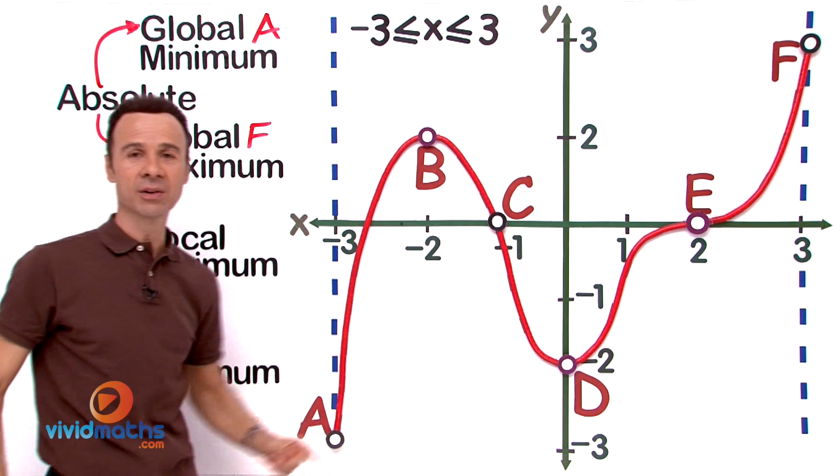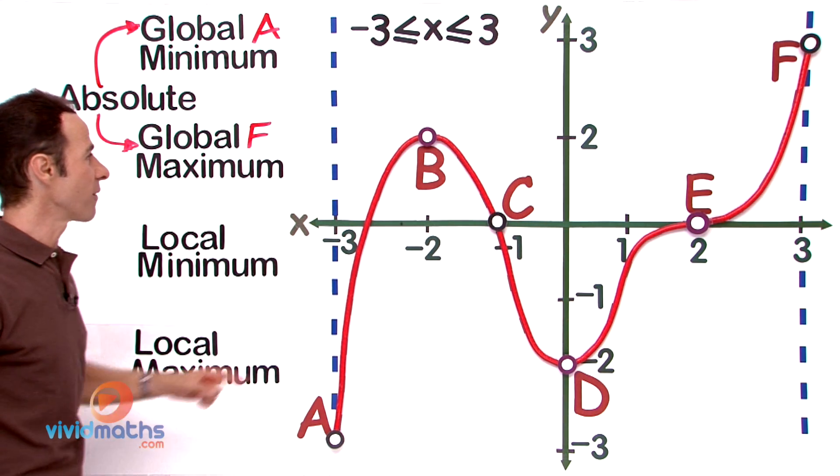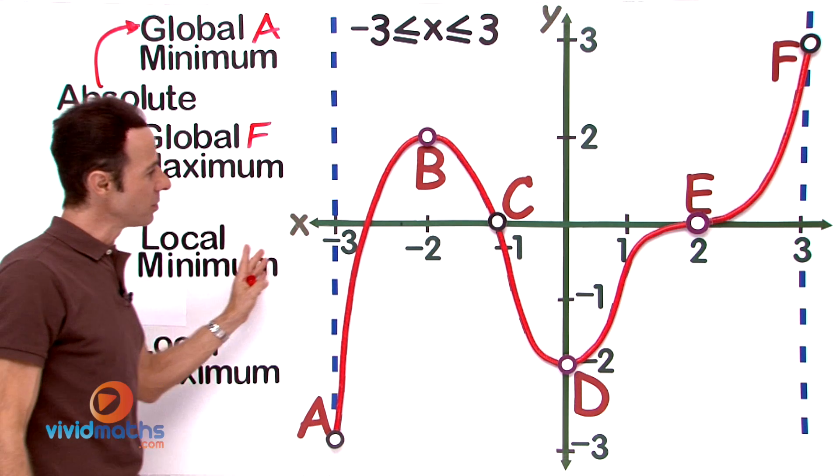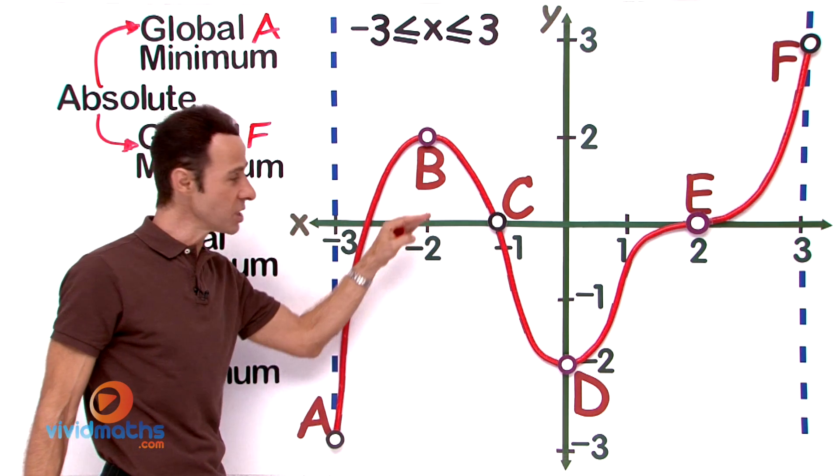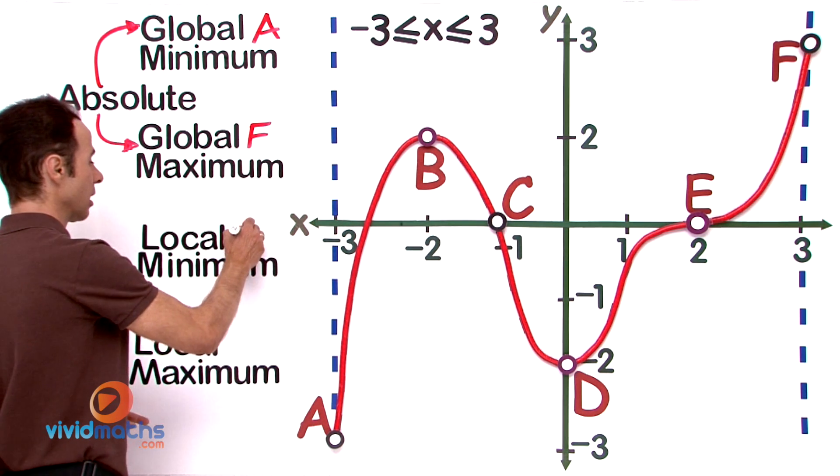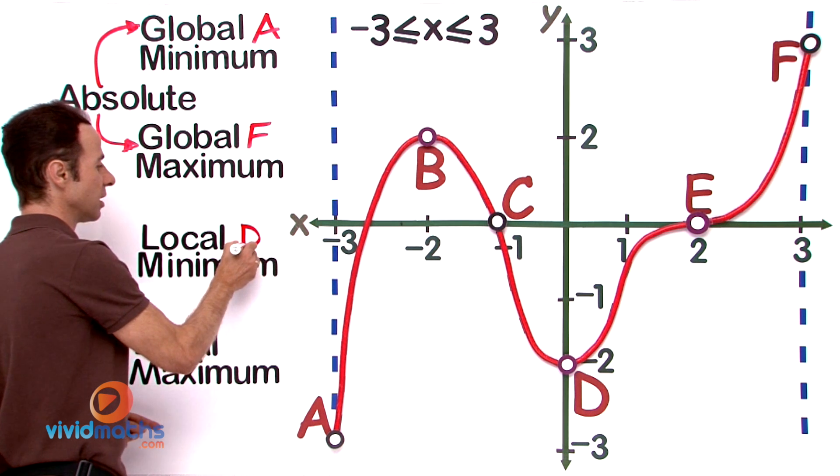So now let us look for the local points. We are looking for a local minimum—the local minimum is going to be not the lowest, not the highest, but locally it would have to be point D over here. So the local minimum is D right there.